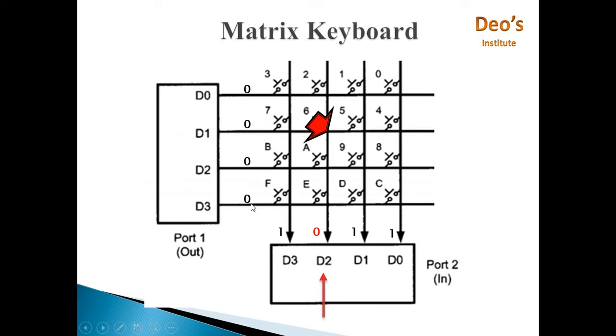To identify row, what we'll do is we'll make all rows 1 except 1 row, and we'll make 1 by 1 all rows, 1 by 1, zeros. So now let's see, here first D0 line is connected to ground and rest all are connected to VCC.